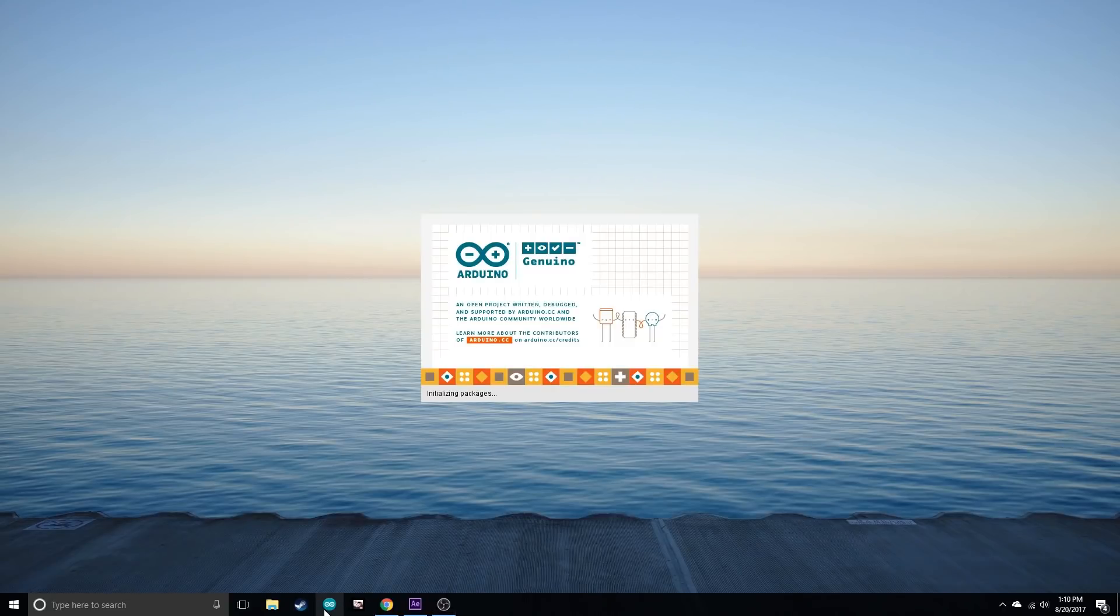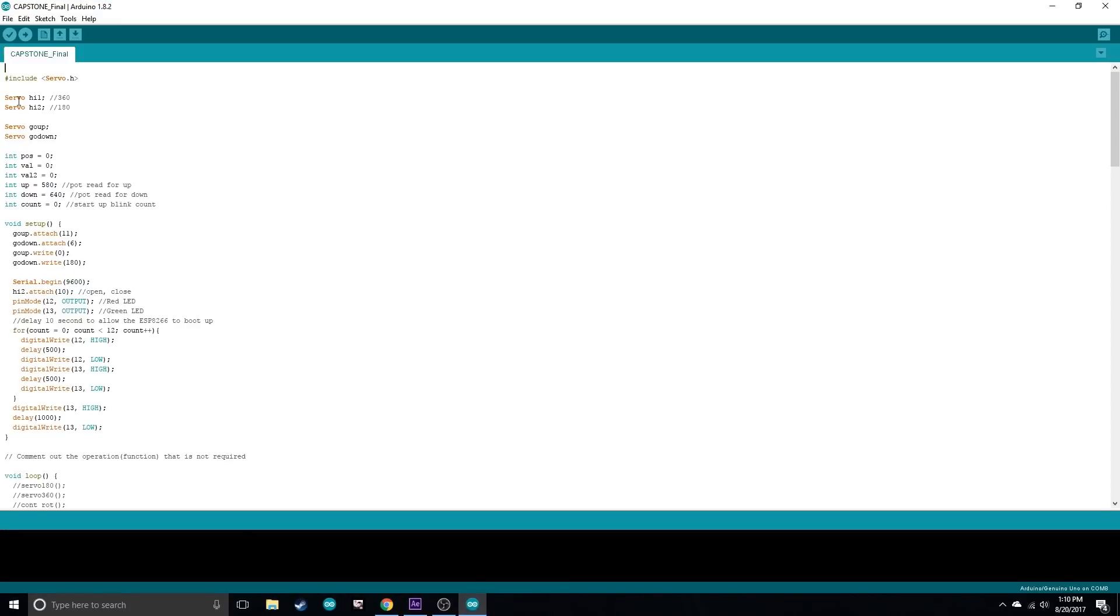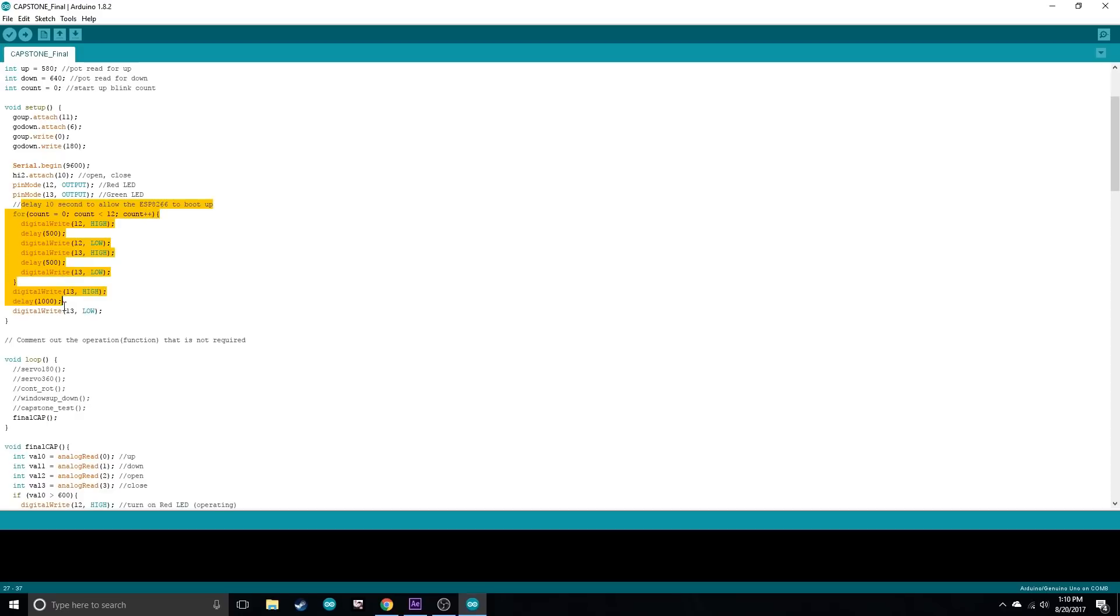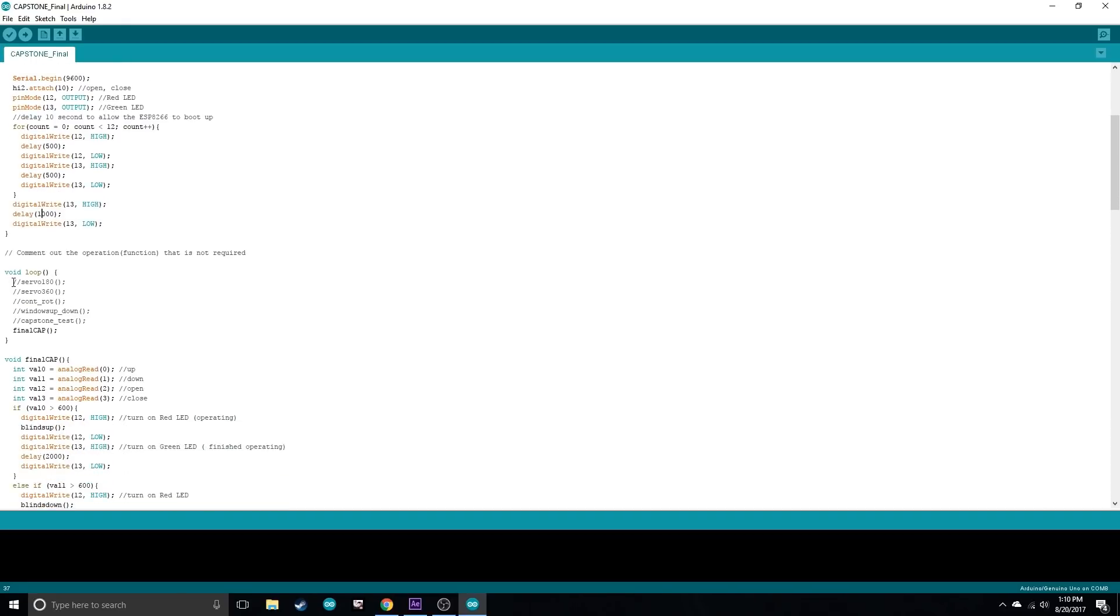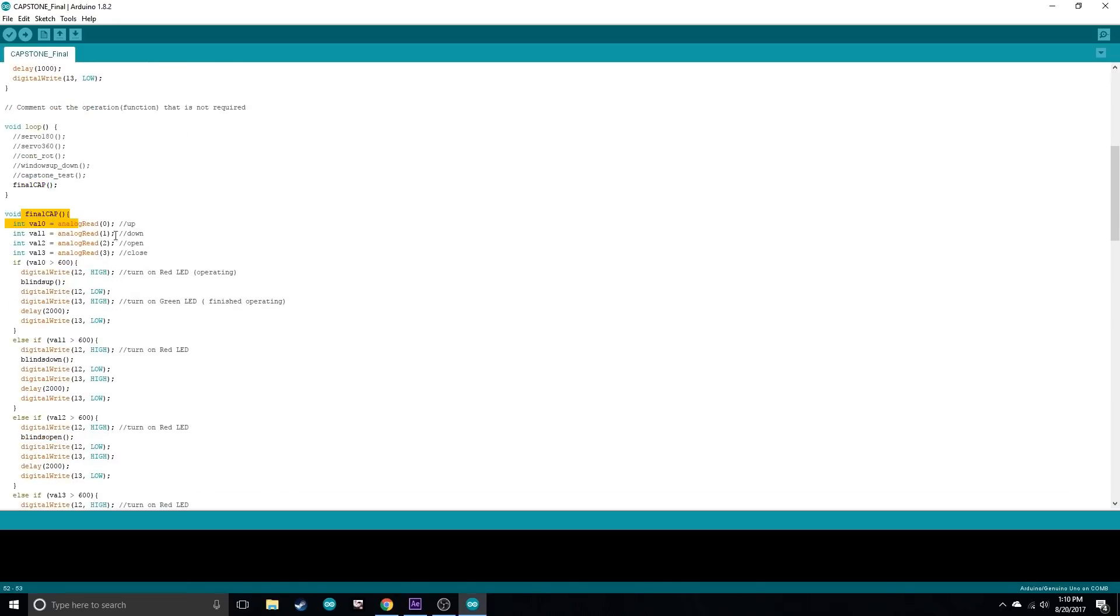Okay, here I just declare the 360 and 180 degree servo. Here are some values I'm going to be using later on. Here's the startup blinking of the lights, so it just blinks on and off for 10 seconds to allow the ESP module to boot up, and then it's going to give you a solid green light for one second afterwards to tell you it's all set. And then down here I just have a bunch of functions so it makes it a little bit simpler to look at. These are just used for testing before the final procedure.